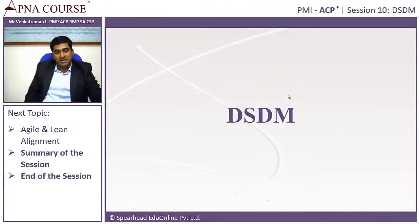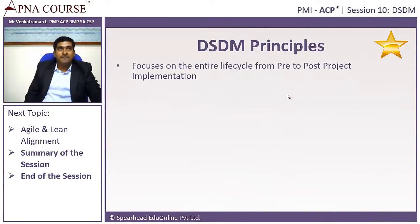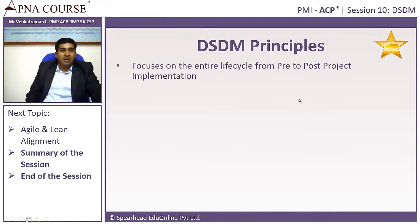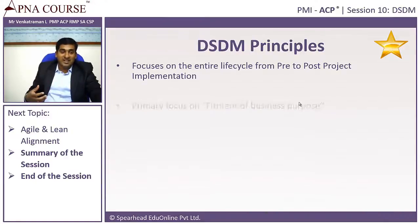Moving on to DSDM — Dynamic Systems Development Method. DSDM actually evolved around 1994, when Rapid Application Development was a big thing. A lot of large companies came together and said this is a little unstructured, and decided to put in a framework to understand how to take certain principles of what you're doing and structure it.